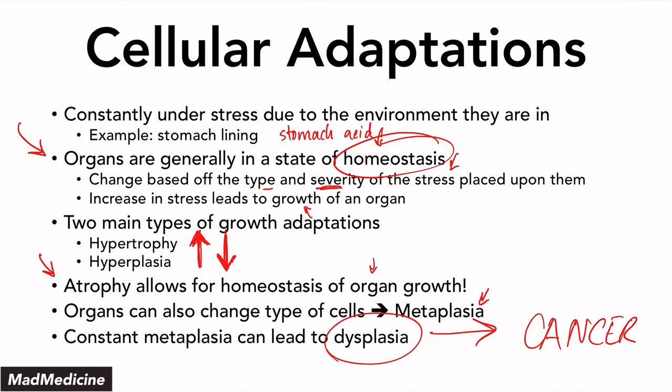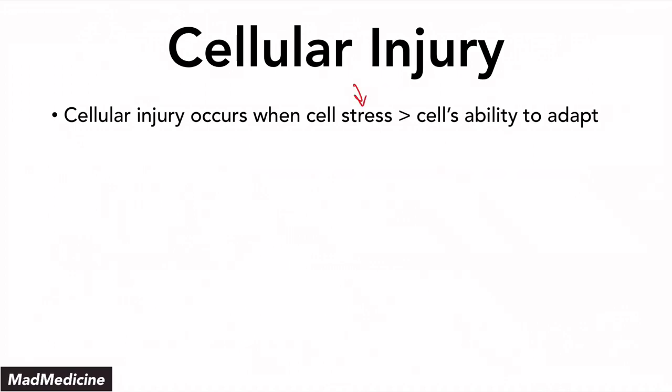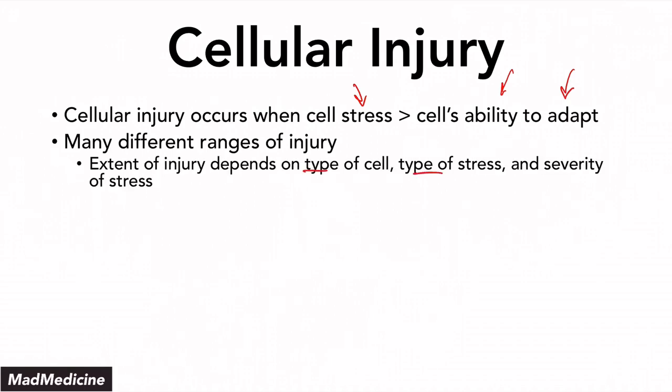Now, just because a cell is adapting doesn't mean it's not going to get damaged. Just because there are increased amounts of stress and our body has different mechanisms to manage that stress doesn't mean the increased stress isn't injuring or damaging the cells in a specific organ. Cellular injury essentially occurs when the cell's stress exceeds the cell's ability to adapt. Your cells and organs have the ability to function in a normal range of stress, but when you exceed that, you're definitely going to damage and injure the cell. The extent of injury depends on the type of cell, the type of stress, as well as the severity.